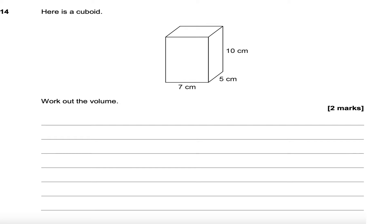This is question number 14. Here is a cuboid. Work out the volume. The volume of a cuboid is the length times the width times the height. So it's seven times five times ten.